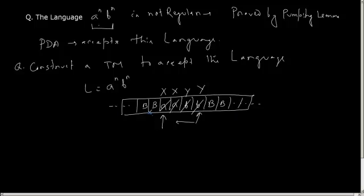So just by the tape movement, how will I remember that I have equal number of A's and B's? First I take the leftmost A, mark it as X, move the tape head to the rightmost thing. If it is not B, I'll simply reject that string — because suppose if it is A, B, A, then it should be rejected because it does not belong to A to the power N, B to the power N.